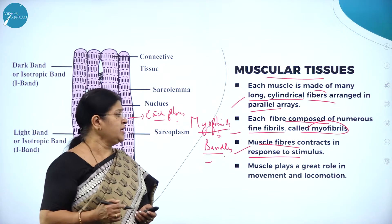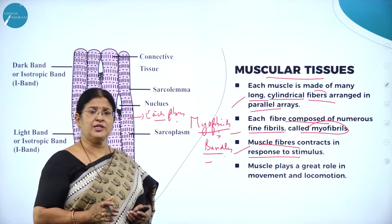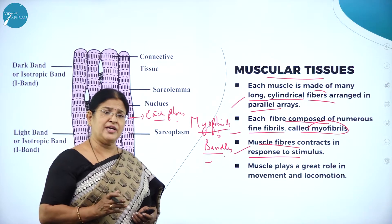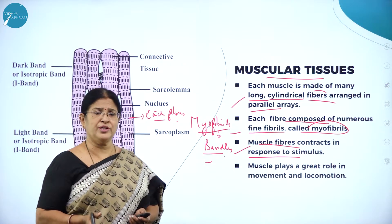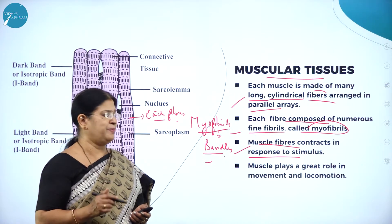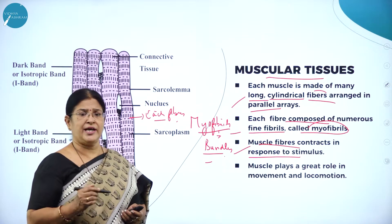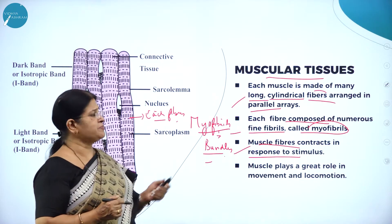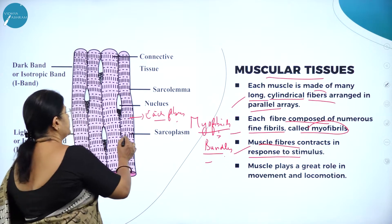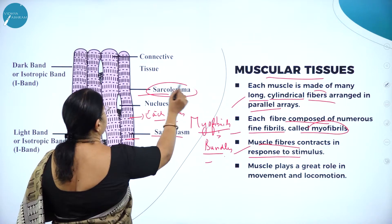Locomotion means moving from one place to another place, and it is a very important characteristic feature of organisms. Animals go in search of food or shelter. So muscle plays a great role in movement and locomotion. Muscular tissues are a type of animal tissue and each muscle is made up of many long cylindrical fibers arranged in parallel arrays. The cytoplasm of the muscle is called sarcoplasm and the membrane of the muscular tissue is called sarcolemma.